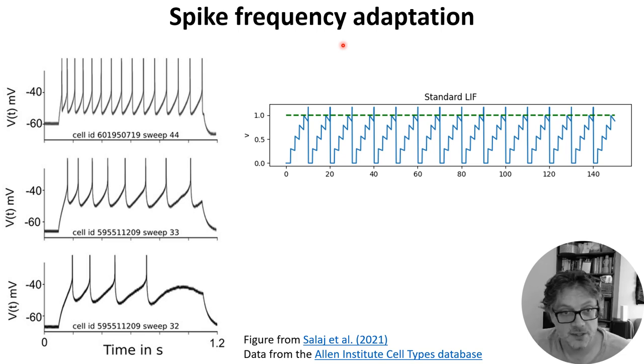In these recordings, they've injected a constant current into these three different neurons and recorded their activity. And you can see, rather than outputting a regularly spaced sequence of spikes, there's an increasing gap between the spikes. You can see it particularly clearly here. This gap here is much longer than this gap here.